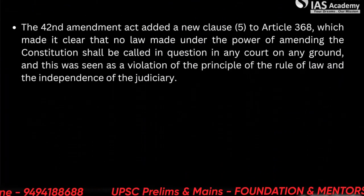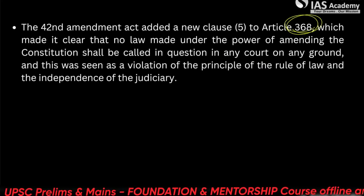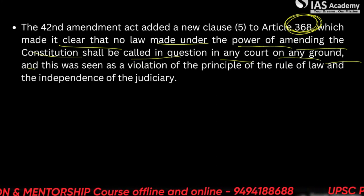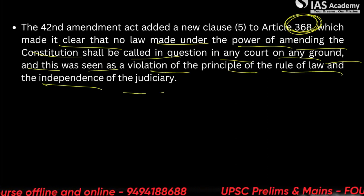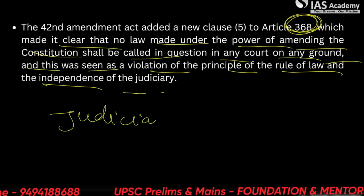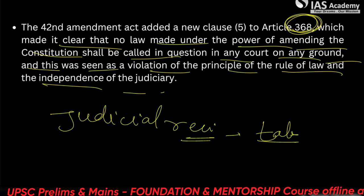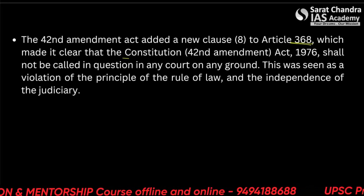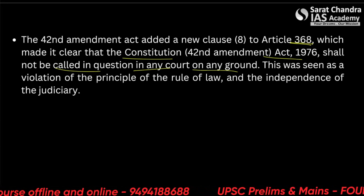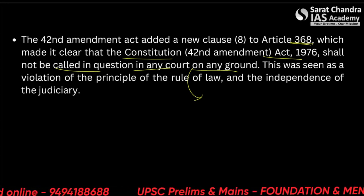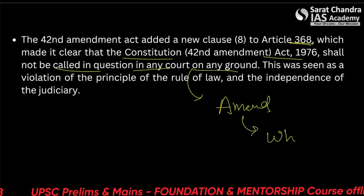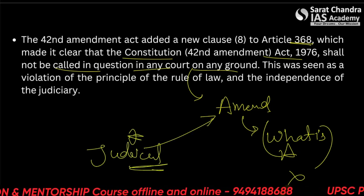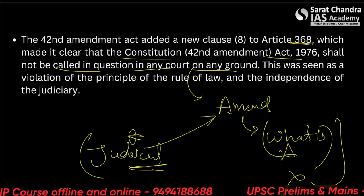The 42nd Amendment Act also added a new clause 5 to Article 368, making it clear that no law made under the power of amending the constitution could be judicially reviewed. This was seen as a violation of the principle of rule of law and the independence of the judiciary. So judicial review was taken away. Further, the amendment also added a new clause to Article 368 making it clear that the Constitution Act 1976 shall not be called in question in any court on any ground. So first, any amendment cannot be judicially reviewed, and this amendment itself cannot be judicially reviewed — giving superpower to the parliament under the prime ministership of Indira Gandhi, undermining the independence of the judiciary.